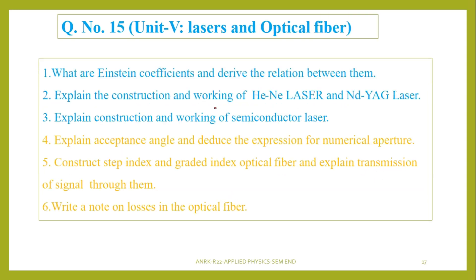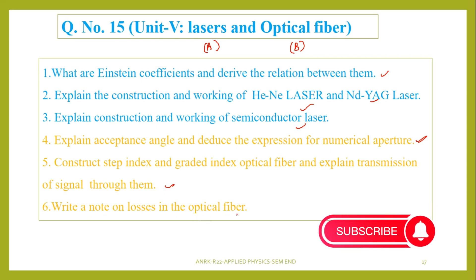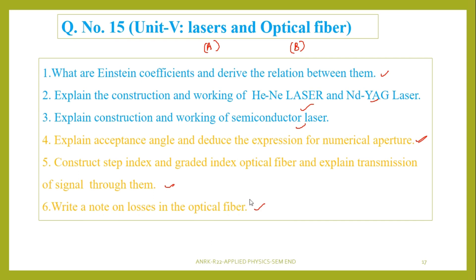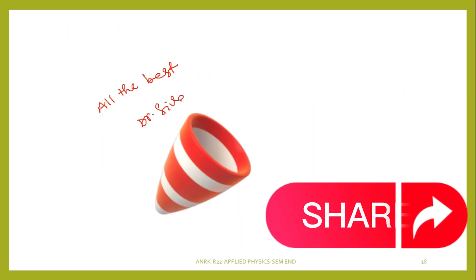From the last unit, question number 15, lasers and optical fibers. This has two parts: lasers and optical fiber. We will get one question from lasers and another from optical fiber. In lasers, we have Einstein coefficients and their relations, construction of helium-neon laser, Nd:YAG laser, and semiconducting lasers. When it comes to optical fiber: explain the acceptance angle and deduce the expression for numerical aperture, step-index and graded-index optical fiber and how the signal is transmitted through them. Then write a note on losses in optical fiber — this is also an important question. All the best. Signing off, Dr. Shivnagaraddy. Jai Hind.